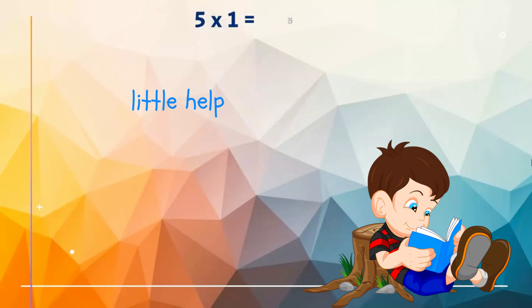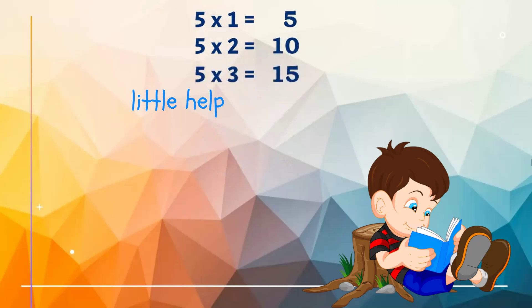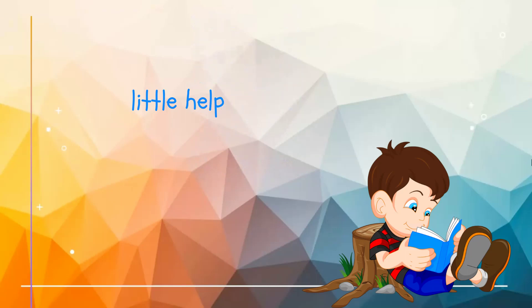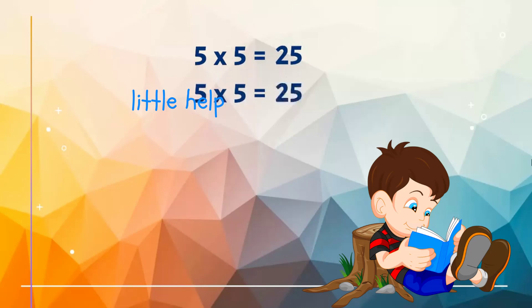Five ones are five. Five twos are ten. Five threes are fifteen. Five fours are twenty. Five fives are twenty-five. Five fives are twenty-five.